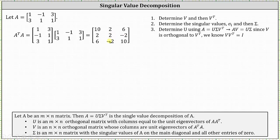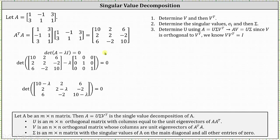Because we're looking for unit eigenvectors of this three by three matrix, the next step is to determine the eigenvalues. We determine the eigenvalues by solving the equation: the determinant of the difference of matrix A and lambda times the identity matrix equals zero, where matrix A is the three by three matrix resulting from A transpose times A. Simplifying inside the parentheses, we find the determinant of this three by three matrix and set it equal to zero.